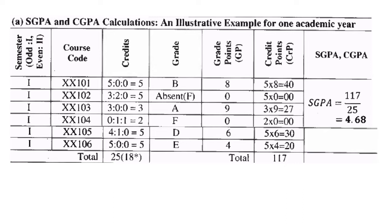Next we assign grade points for each grade. For a fail the grade point is zero. The products of credits × grade points are: 5×8=40, 5×0=0 (failed subject), 3×9=27, 2×0=0 (failed), 5×6=30, 5×4=20. Adding all these gives a total of 117. The total credits are 25, so SGPA = 117 ÷ 25.